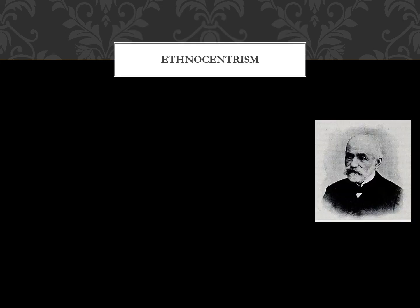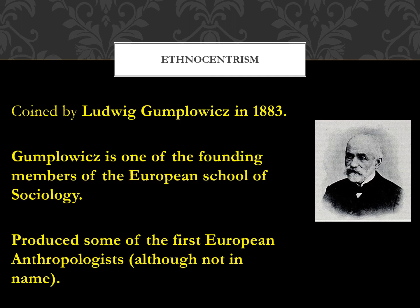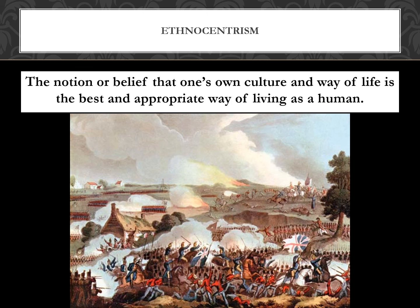One of the fundamental concepts Boas brought up that we still consider in anthropology is ethnocentrism, originally coined by Ludwig Gumplowitz in 1883, who was essentially one of the founding members of the European School of Sociology. Ethnocentrism is defined as the belief that one's own culture and way of life is the best and appropriate way of living as a human, and that all other cultures are somehow doing it incorrectly.